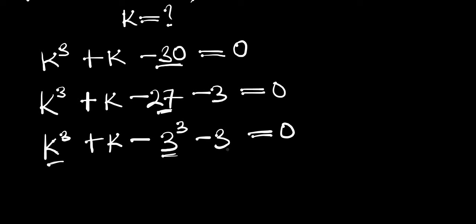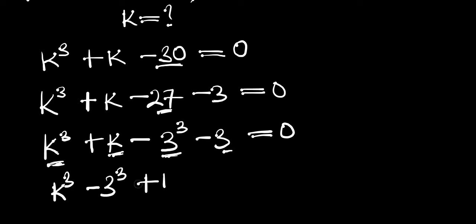Looking at the equation we now have k³ and 3³, and also k and 3. We are going to combine the terms with powers of 3 together: k³ minus 3³, then combine the remaining terms: plus k minus 3, and this equals zero.